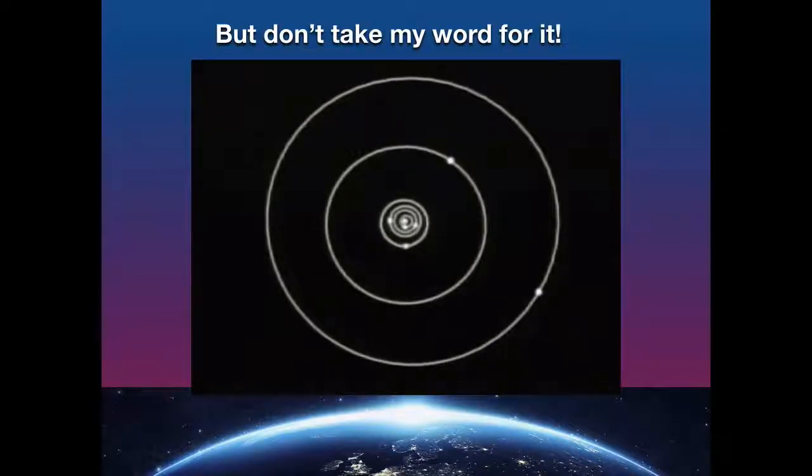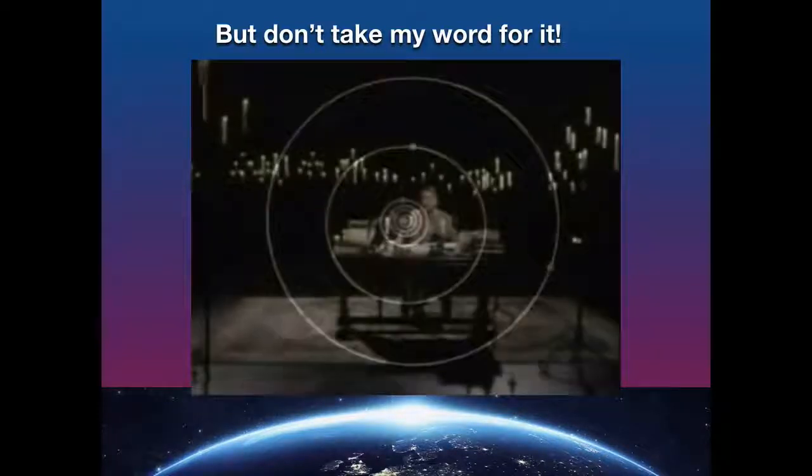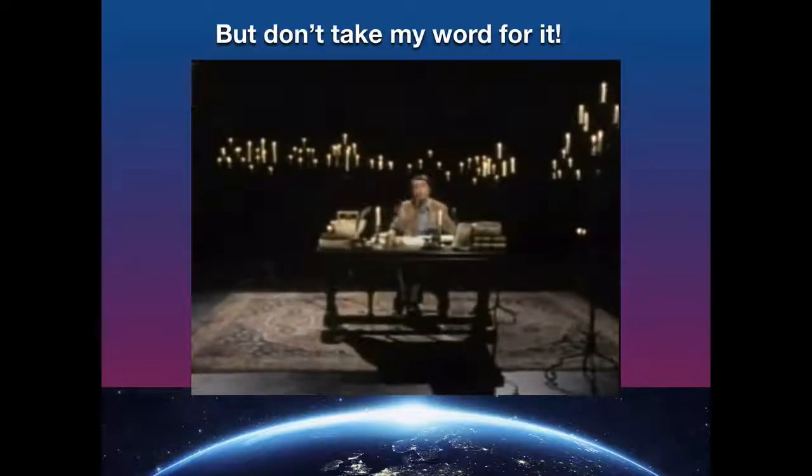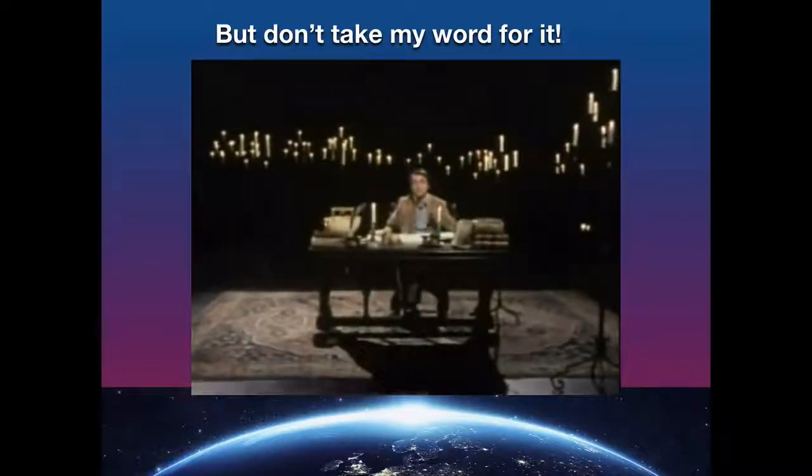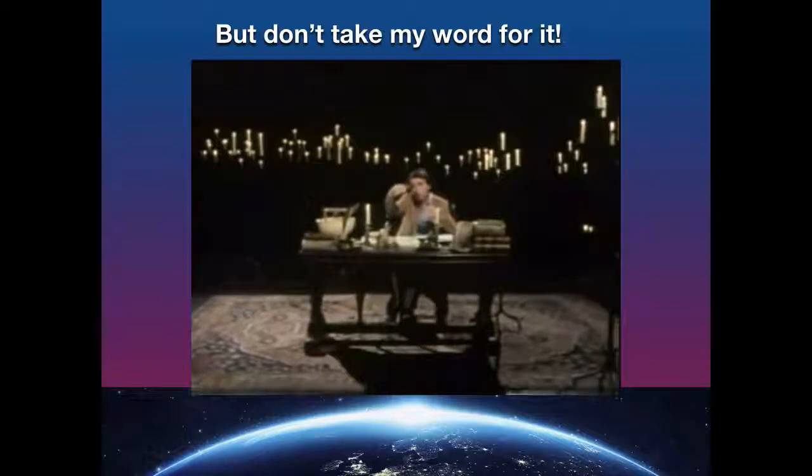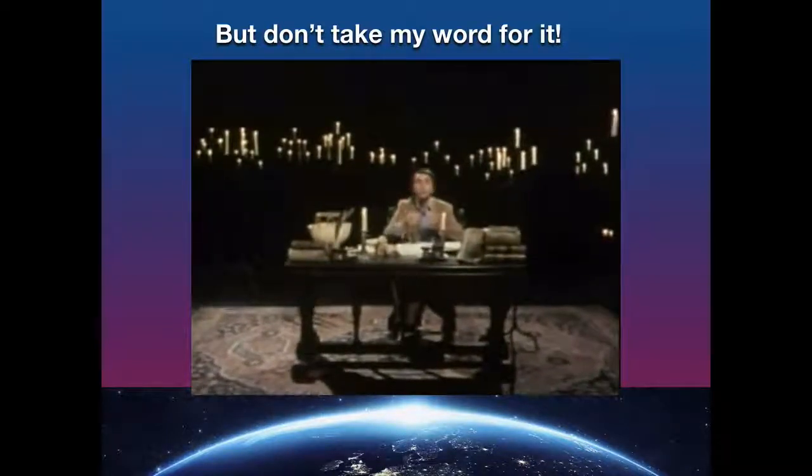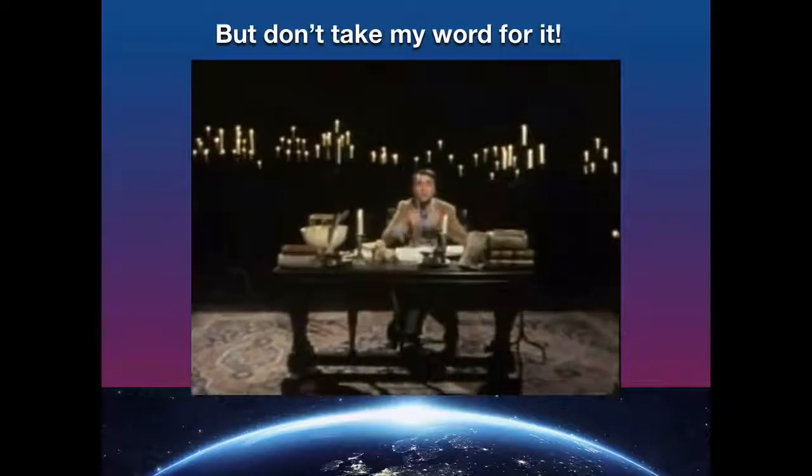Kepler's third or harmonic law states that the squares of the periods of the planets—the time for them to make one orbit—are proportional to the cubes of their average distances from the sun. So the further away a planet is from the sun, the slower it moves, but according to a precise mathematical law.